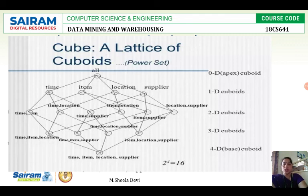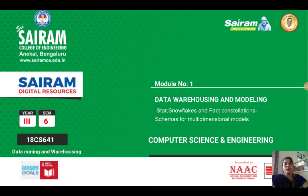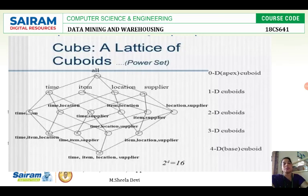This is how we form cuboids. The data cube contains a number of dimensions in the dimension tables. The lattice of cuboids forms the complete data cube. Hope you would have understood better. Thank you.